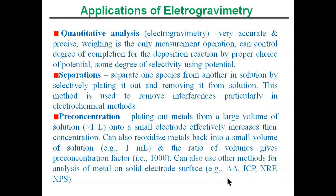Other advanced methods can also be used to analyze metals on the solid electrode surface — for example, atomic absorption (AA), ICP, XRF, and XPS techniques. These confirm that all the metal analyte has been re-oxidized back into solution. The electrogravimetric technique is very important for pre-concentration of metal-based analytes.